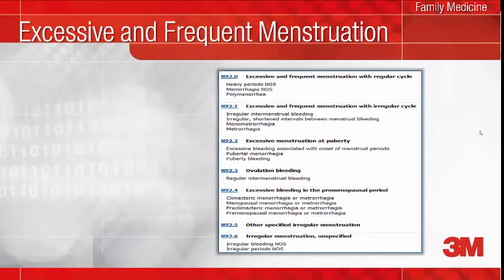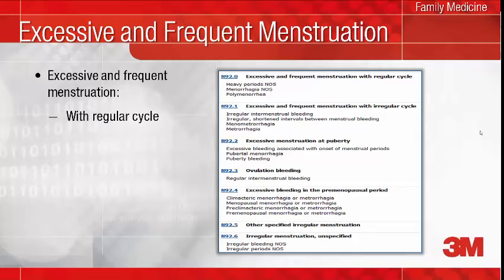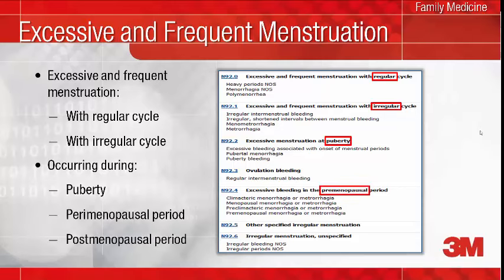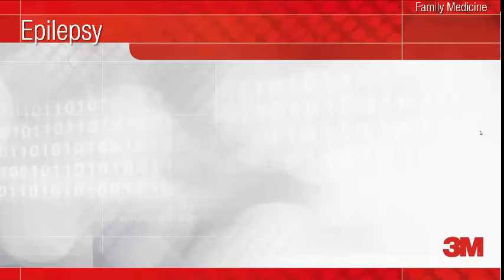What's new with the code for excessive and frequent menstruation is that it is now specified as with a regular menstrual cycle or with an irregular menstrual cycle. The coding professional is dependent on your documentation of the regularity of the menstrual cycle in order to assign one of these two codes. Additionally, it is important to indicate in your documentation whether this bleeding is occurring at puberty, during the perimenopausal period, or in the postmenopausal period timeframe, since there are separate codes for excessive or frequent menstruation at each of these timeframes.